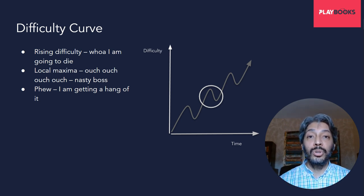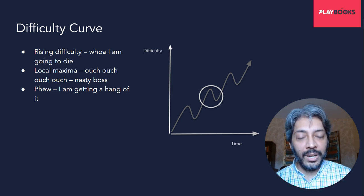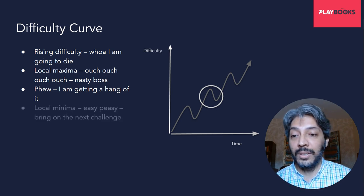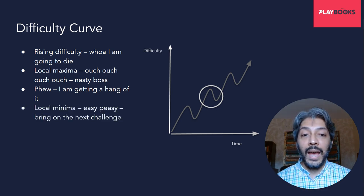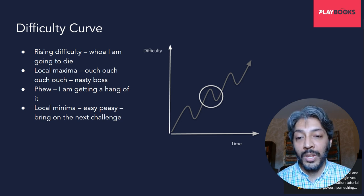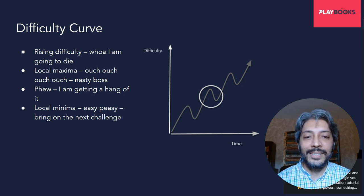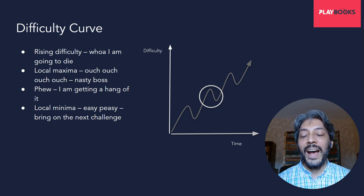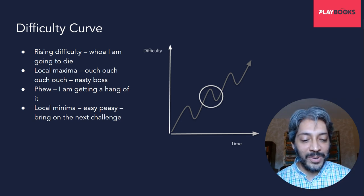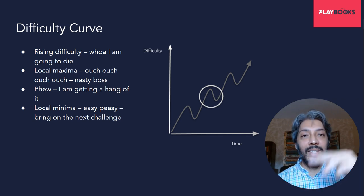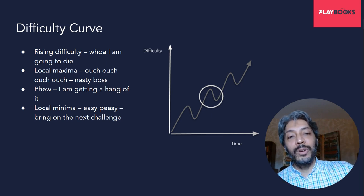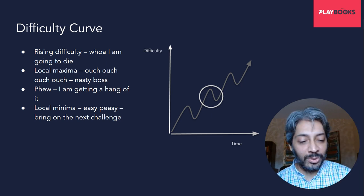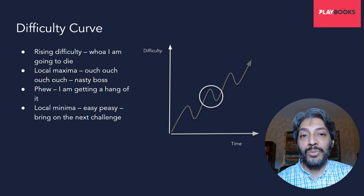It lets you use the newfound powers you've figured out. Usually after a boss fight, the next level is typically easier. Then you hit a local minima and you're like, hey, this is great — now I can be ready for the next challenge. This curve is a slowly upward-moving curve, but it goes up, it goes down, it goes up and goes down — which is why games are so much fun.